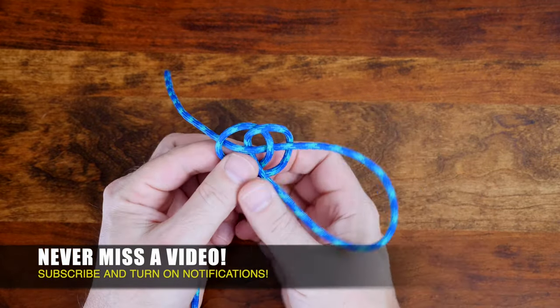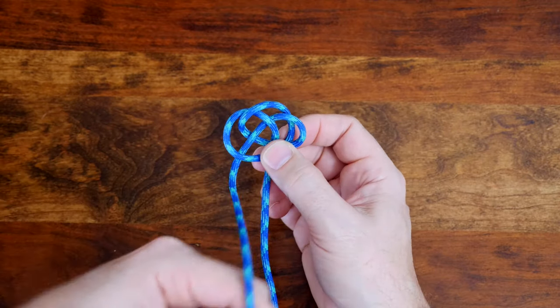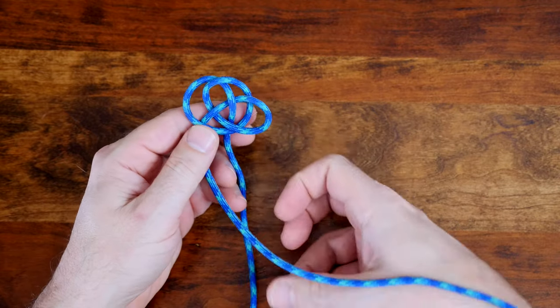The Celtic Button Knot is essentially a single strand Turks head knot that's structured in such a way that it's effectively tied around the rope itself, creating a stopper.